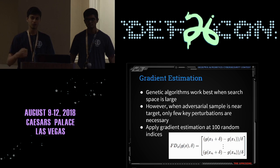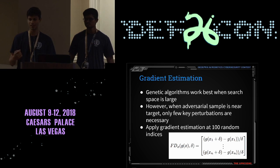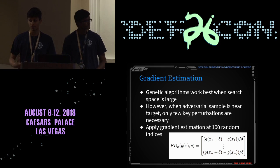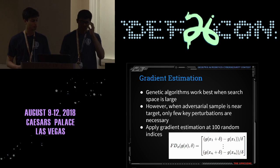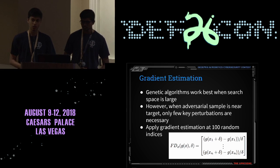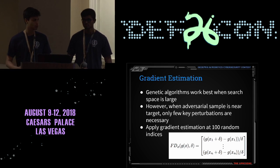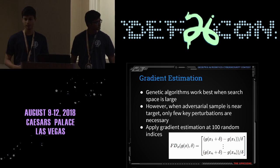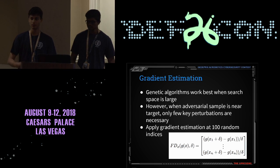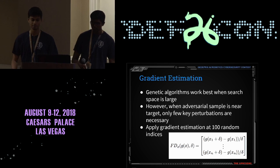For a one-second audio clip with 16,000 possible indices, this is a lot of computation for just one gradient step. As a heuristic to reduce computation cost, we randomly choose the 100 best indices, apply the gradient estimation to those points, and keep iterating.